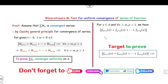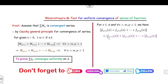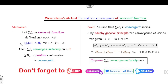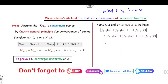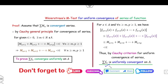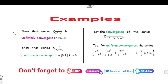The target is to prove |f_{n+1} + f_{n+2} + ... + f_{n+p}| < ε. Starting from the left-hand side, since |a + b| ≤ |a| + |b|, this is less than |f_{n+1}| + |f_{n+2}| + ... and by the given condition |f_n(x)| ≤ M_n, this is less than or equal to M_{n+1} + M_{n+2} + ... + M_{n+p}, which is less than ε. Therefore by Cauchy criteria for uniform convergence, the series is uniformly convergent.